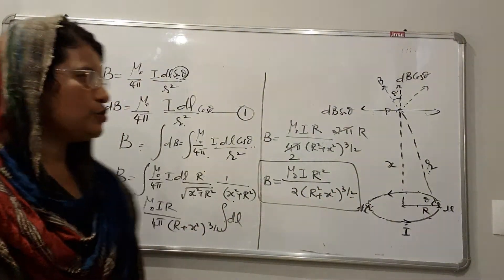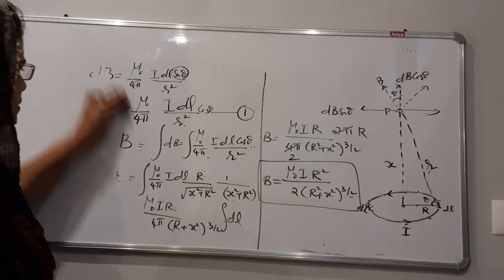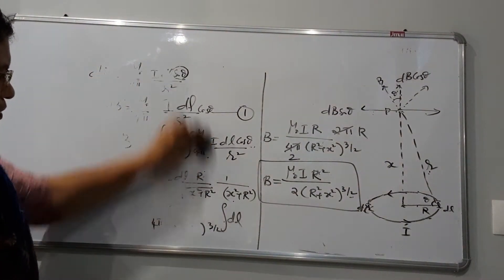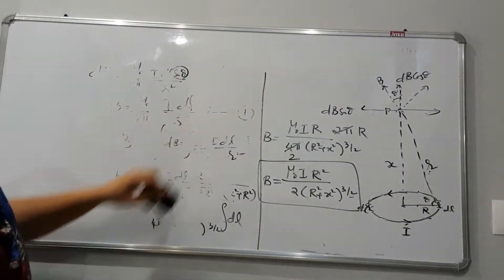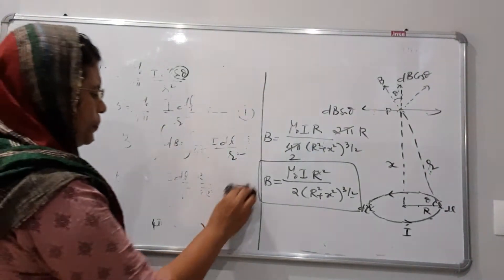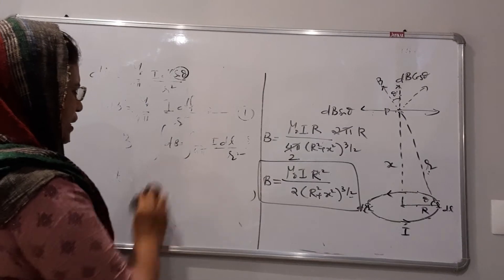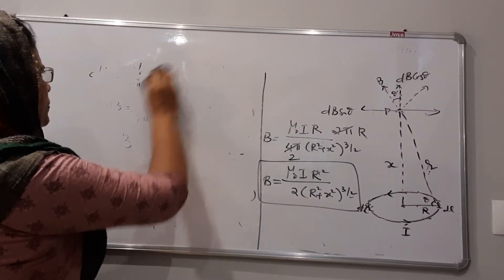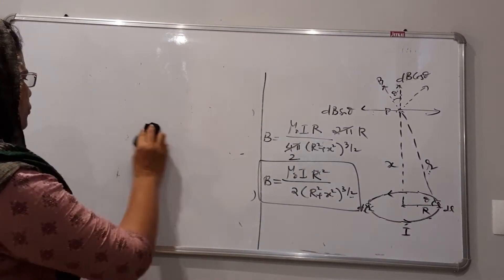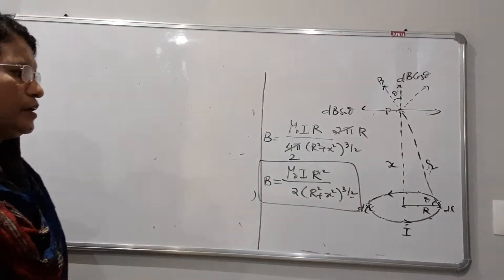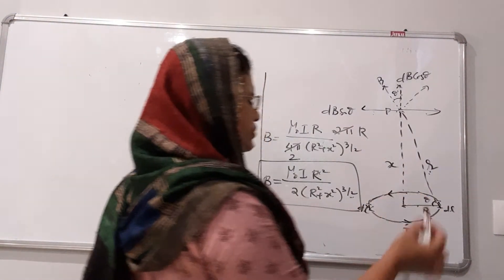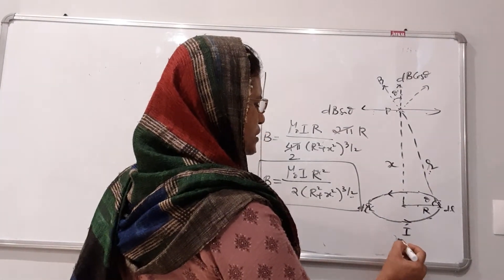Now we consider two special cases. Case 1: when point P is at the centre of the current-carrying loop. Also, if there are n number of turns in the coil, the magnetic field strength is multiplied by n.